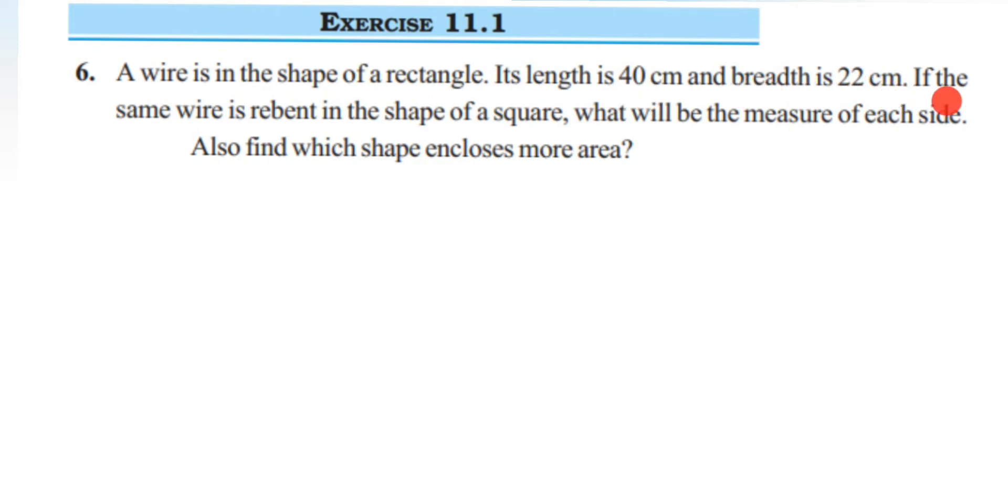If the same wire is rebent in the shape of a square, what will be the measure of each side? Also find which shape encloses more area. So we have to find out two things here.